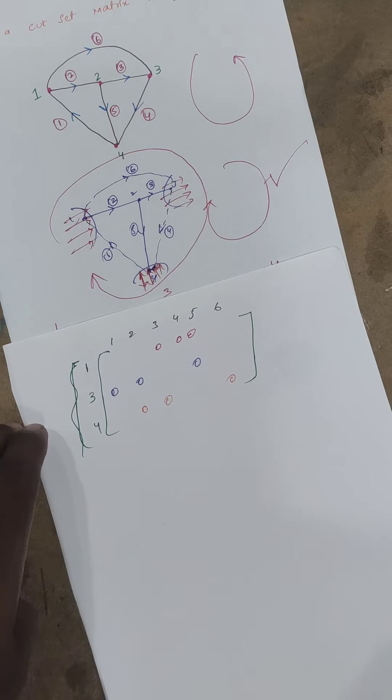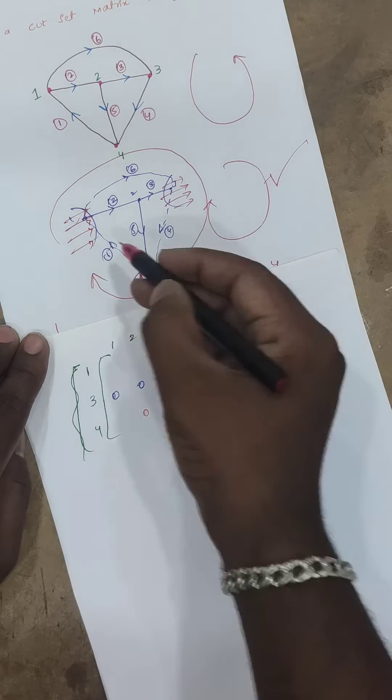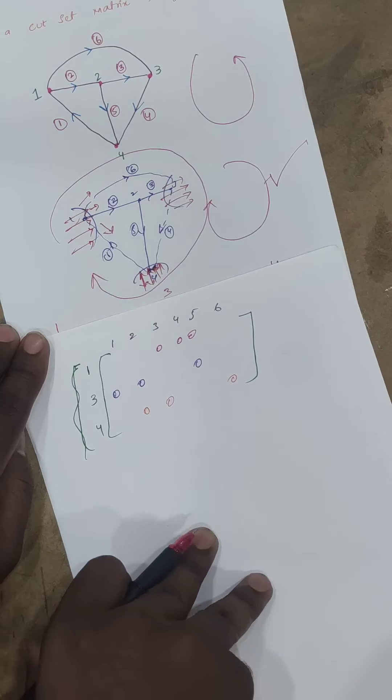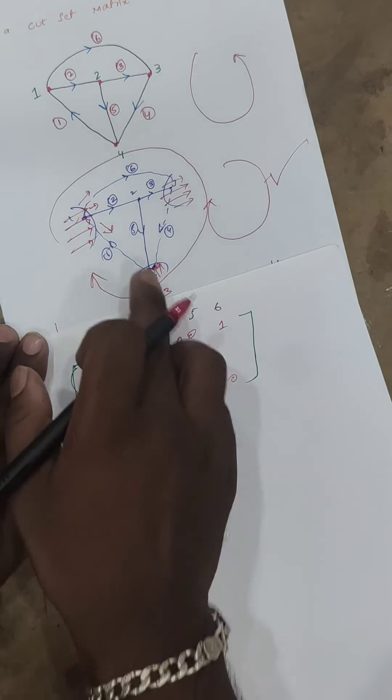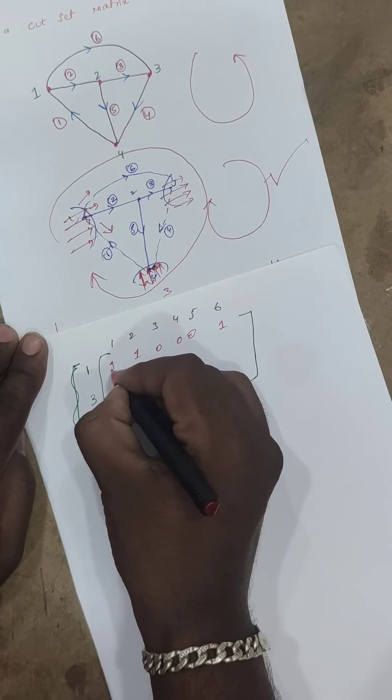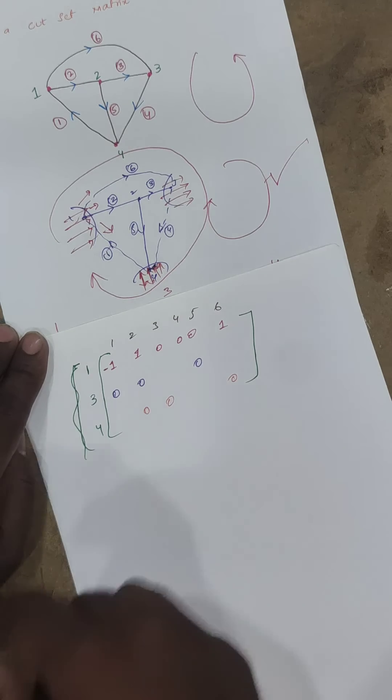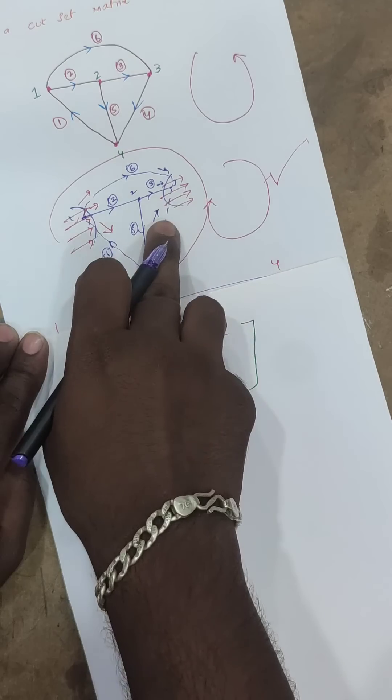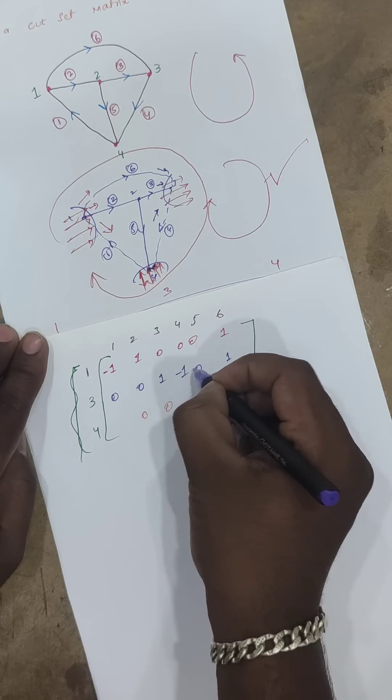Now filling the matrix. Two plus one and six plus one. This is the opposite direction, so this is minus one, one minus one. Next, this is the opposite direction. Three and six are in the same direction, so positive. Four is minus one.